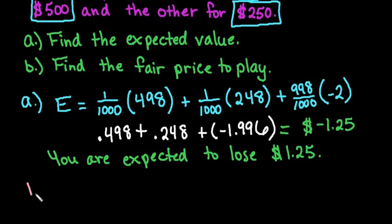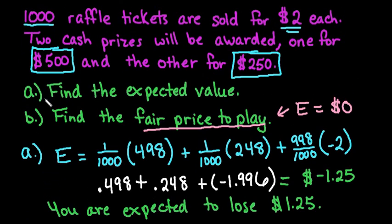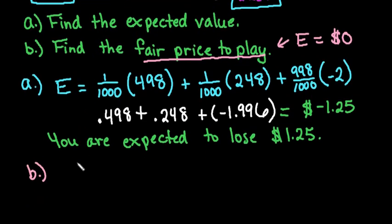For the second part here, we want to find the fair price to play. That means that the expected value equals 0. So that means that there is no gain, there is no loss, the expected value is 0. So in order to find this, basically what you're going to do, and you could set this up algebraically, but it will always work out this way, you can take the expected value of the 1 over 1,000, because if I add up 1 over 1,000 plus 1 over 1,000 plus 998 over 1,000, that gives me 1,000 out of 1,000, which is 1.